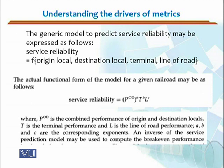Service reliability would be equal to POD — that is, origin and destination — to some power A, with T to power B, and L to power C. Where POD is the combined performance of the origin and destination locals, T is the terminal performance, and L is the line of road performance. Whatever was in our function of service reliability, we have taken it in our service reliability model. In addition to it, A, B, and C are the corresponding exponents.